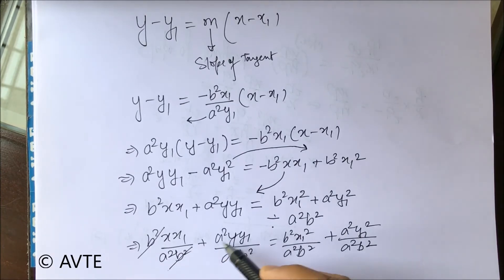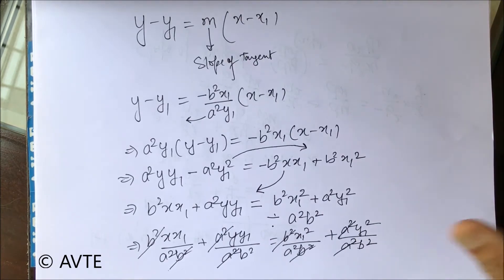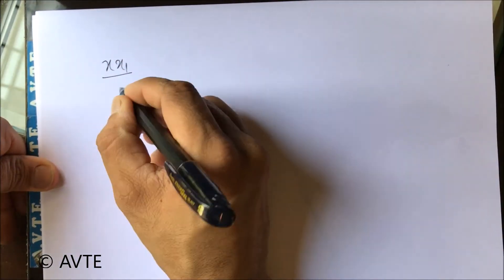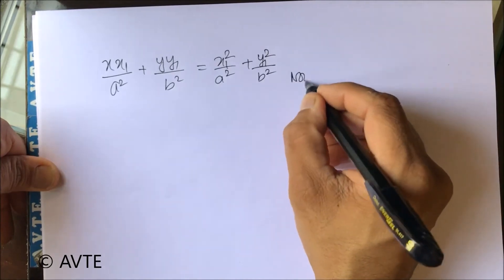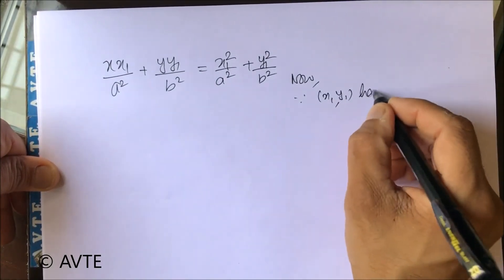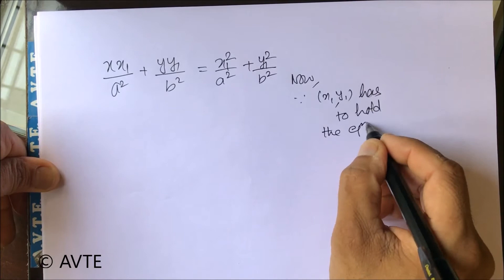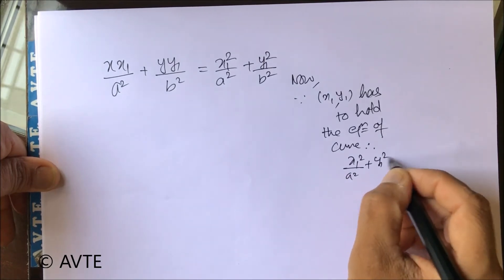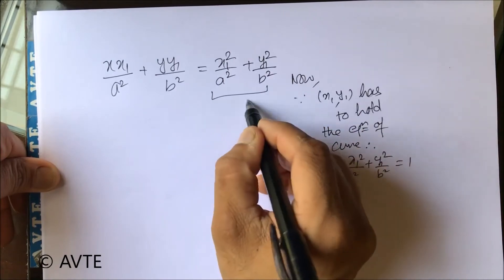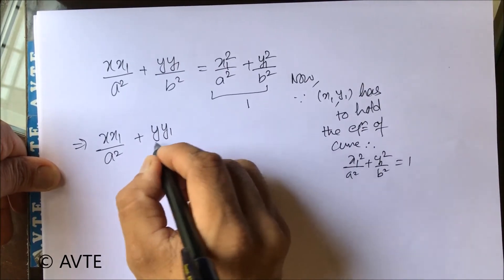Now we can cancel b square with b square here, and a square with a square. Also b square on this side and a square on this side, leaving behind. Now because the point of contact has to hold the curve, it will be equal to one, so this side turns to one.